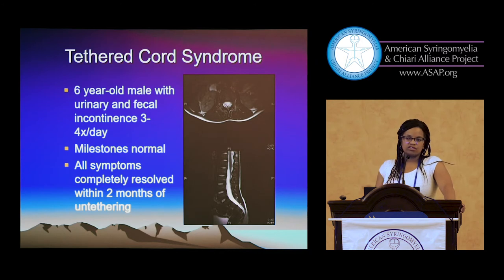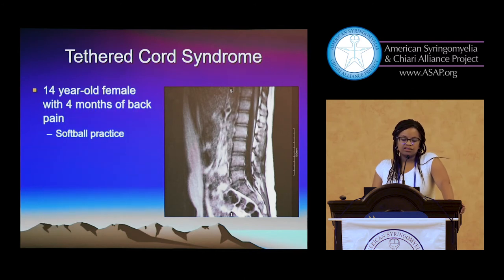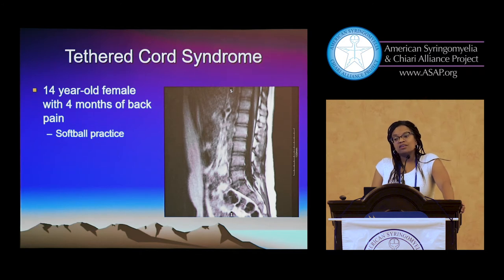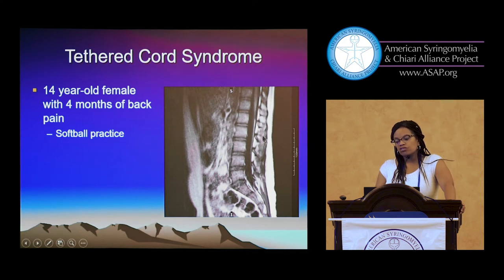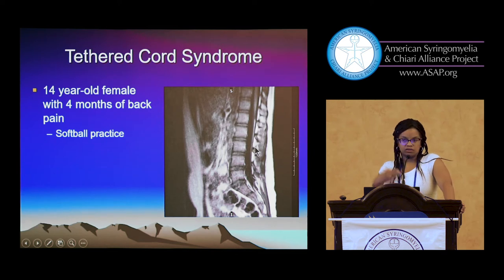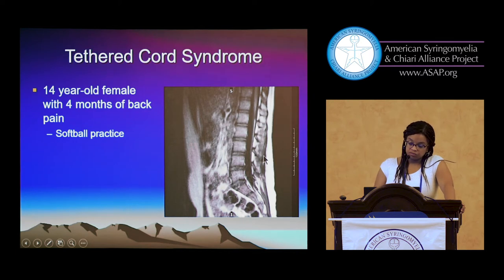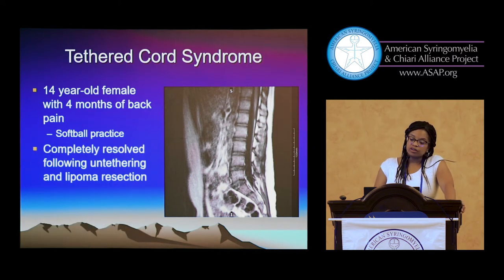Just like with Chiari, every patient with tethered cord doesn't have every symptom. This is a young girl, 14 years old, who had had back pain for four months — it was blamed on softball. She was very athletic, but it hadn't gone away, so she got an MRI. Her conus is not low-lying, but her spinal cord is very straight and has a bright signal — a dorsal spinal cord lipoma, not as big, but again tethering the spinal cord. Her back pain resolved following untethering.